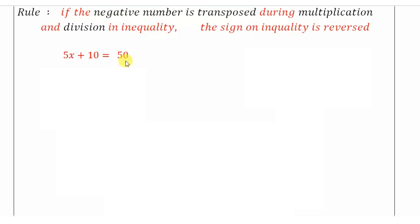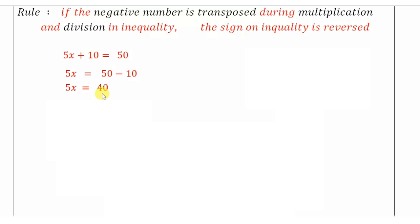I'll show you with an example. 5x plus 10 equals 50 — this is an equation. I'll transpose 10 to the other side, so 50 minus 10 gives 40. To get the value of x I transpose the 5, so 40 divided by 5 gives x equals 8.